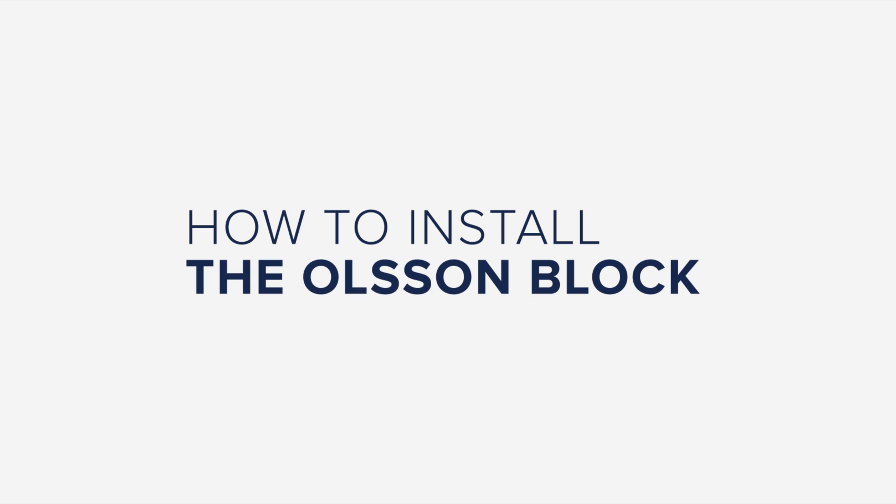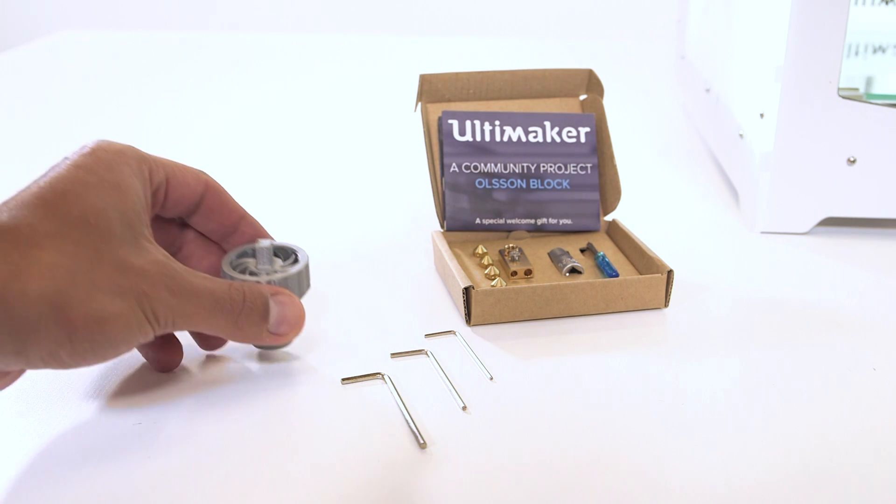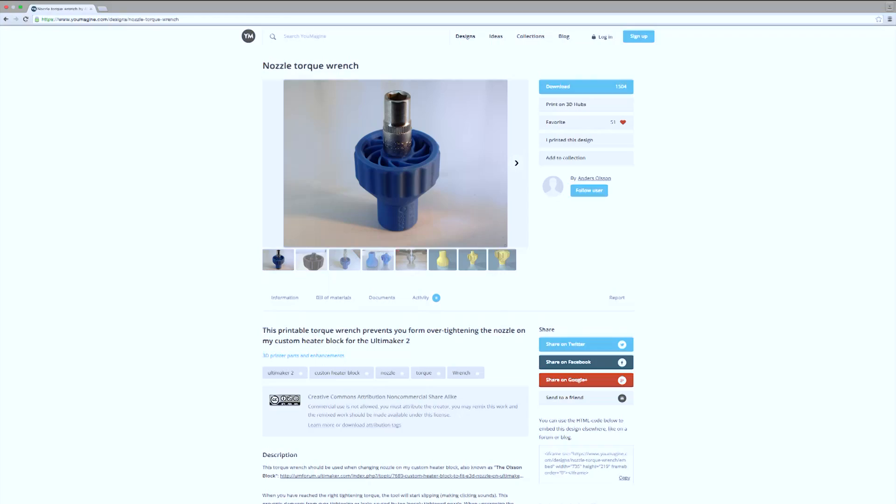The Olsen Block allows you to easily swap nozzles of your choice into your Ultimaker printer. This guide will show you how to install the Olsen Block. The kit comes with four nozzles and installation tools.